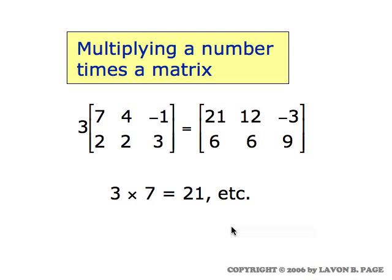What do you suppose it means to multiply a number times a matrix? Here we have a matrix which has two rows and three columns, and we're multiplying it times the number three. You see that what happens is we multiply every entry in the matrix times three. Three times seven is twenty-one, three times four is twelve, and so forth. In summary, multiplying a number times a matrix just means multiplying that number times each entry of the matrix.